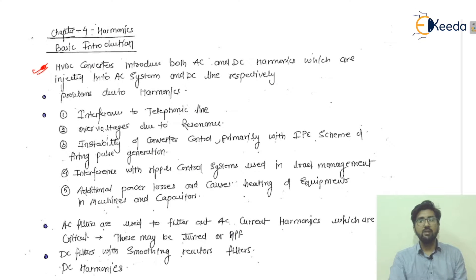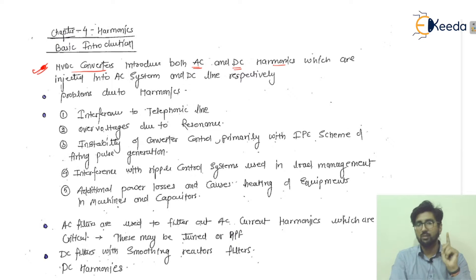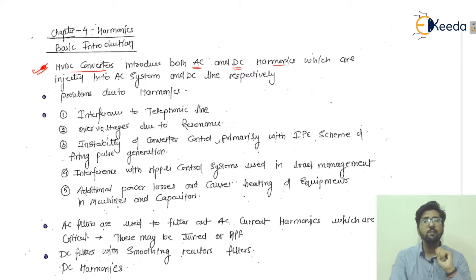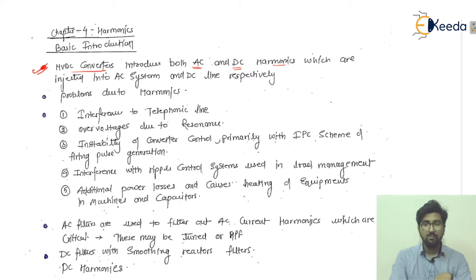The first point is that HVDC converters introduce both AC and DC harmonics. In an HVDC transmission system, from the generating end to the load we are operating with both AC and DC. Between the two converter stations the transmission line carries only DC current and DC voltage, while on either side we have AC fundamental values. On the AC side we have AC harmonics, and on the DC side we have DC harmonics.